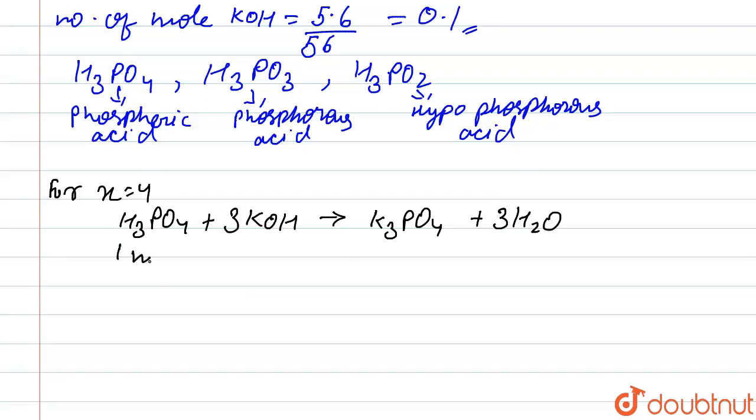1 mole of H3PO4 reacts with 3 moles of KOH. That means 0.1 mole of H3PO4 required 0.3 mole of KOH. But in the question, 0.1 mole of H3PO4 required 0.1 mole of KOH. So it does not fulfill our condition.